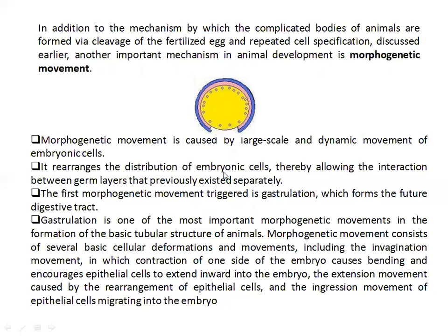What is gastrulation? Gastrulation means the formation of three germ layers. There are three germ layers: ectoderm, mesoderm, and endoderm.